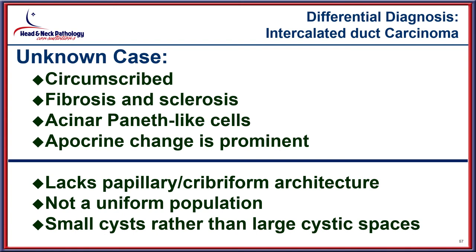In our unknown case, there is circumscribed fibrosis and acinar/Paneth cell-like appearance with apocrine change, but there is no papillary or cribriform architecture. The lesion is not of a single uniform appearance, and it has multiple smaller cysts rather than a single large cyst space — arguing against intercalated duct carcinoma.